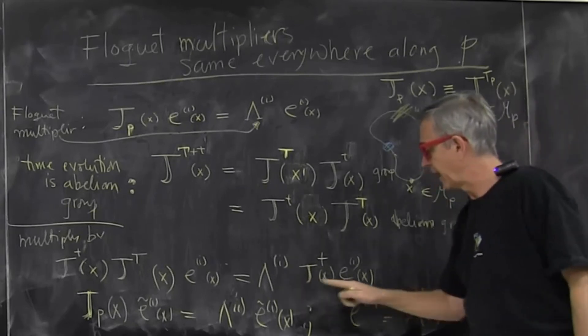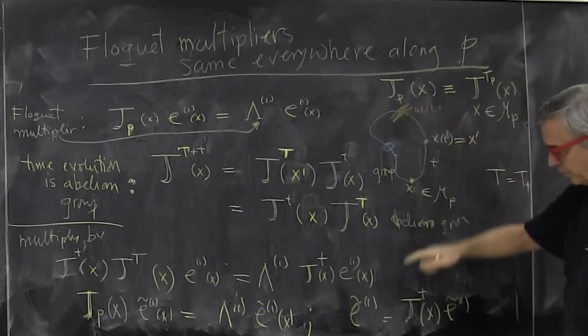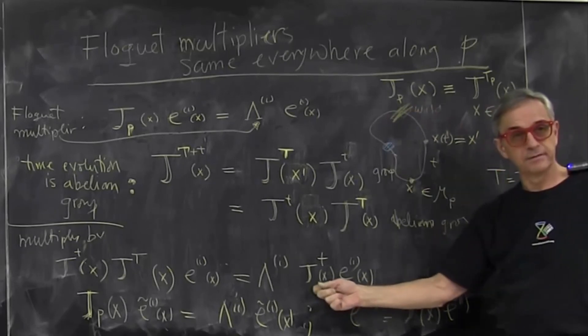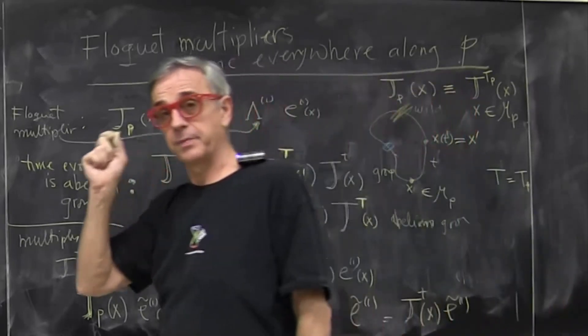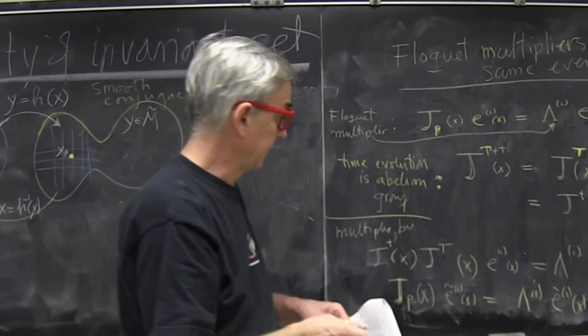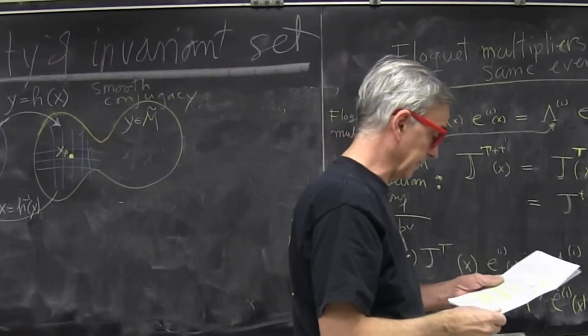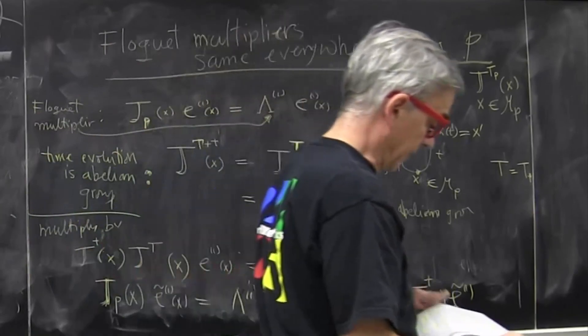That if you solve your eigenvalue problem any place on the loop, you know the eigenvector. It's being covariantly transported along the loop just by Jacobian itself, which you know how to compute. The multiplier is an invariant property just of periodic orbit of the whole set, even though you're computed in particular coordinates. So that's the first nice result.